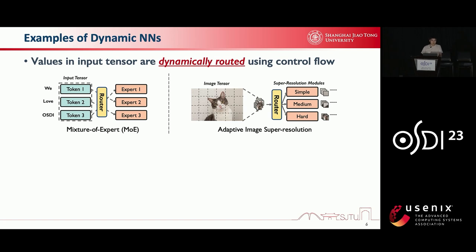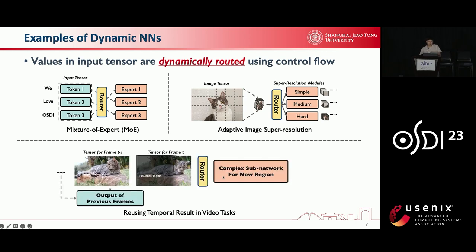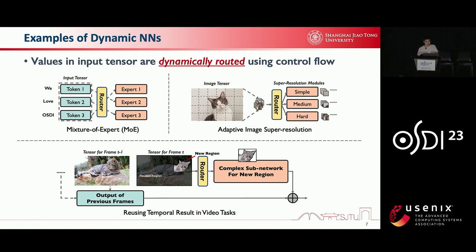Because the complexity of these patches can vary much, they are routed to different modules. For instance, some patches only contain background — their complexity is low, so they are routed to the simple module for processing. Others with higher complexity, for example the cat's face, are routed to the medium or the hard module for processing. The last example uses temporal results in video tasks. Most values in tensors for adjacent video frames are the same. Therefore, only the parts with different values need to be routed for processing; others can be directly reused.